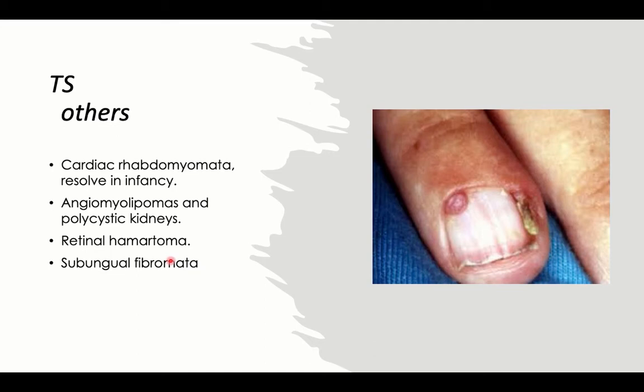Other organs that can be affected, other than the skin and nervous system, include the heart by cardiac rhabdomyosarcoma — so echocardiographic monitoring for these cases is indicated. The kidney can be affected by angiomyolipoma or polycystic kidney; tuberous sclerosis was one of the differential diagnoses of cystic kidney disease. The retina can be affected by retinal hamartomas, detectable on fundus examination.